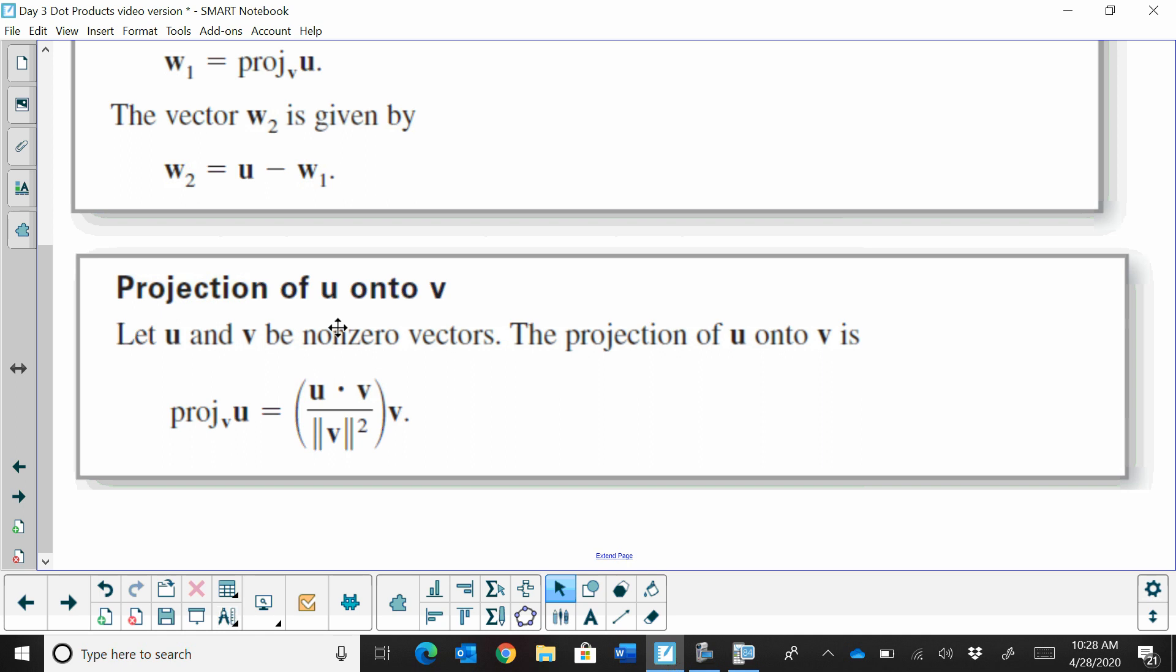Projection of u onto v: Let u and v be non-zero vectors, and the projection formula is the following. The projection of u onto v is the dot product of u and v divided by the magnitude of v squared. That becomes a ratio, or almost like a partitioning of a vector, and then you multiply that times vector v.